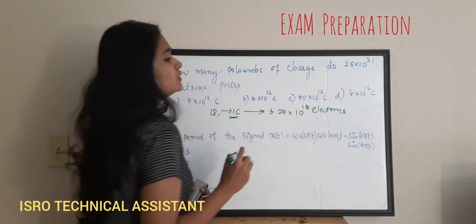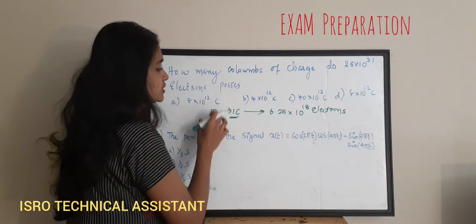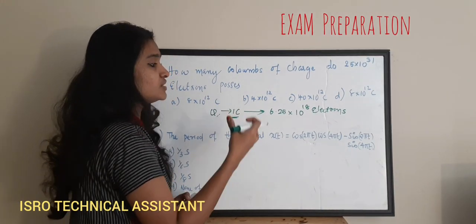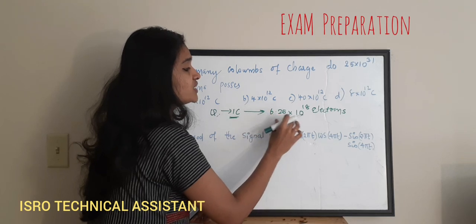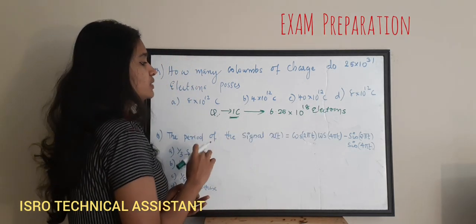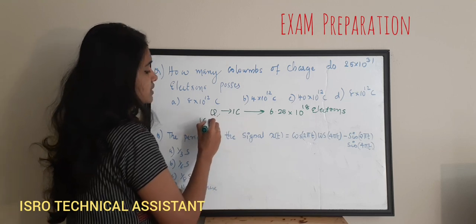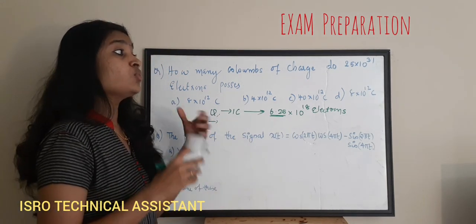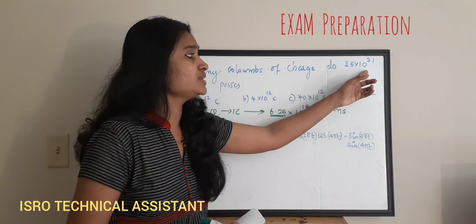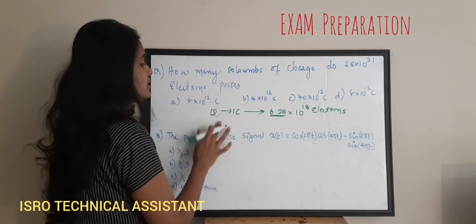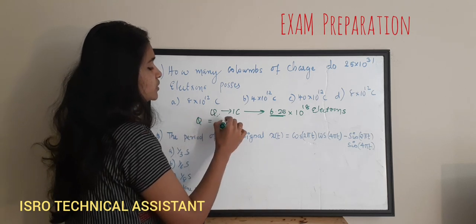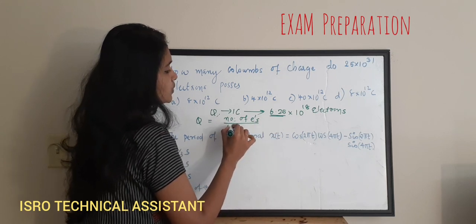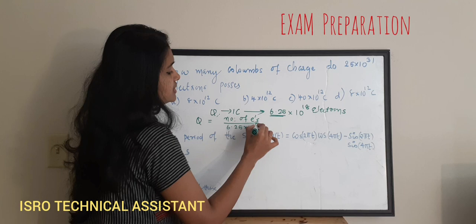So this is one thing you have to know. One coulomb of charge is defined as the charge possessed by 6.25×10¹⁸ electrons. So if one coulomb is the charge possessed by 6.25×10¹⁸ electrons, what will be the charge possessed by 25×10³¹ electrons? The equation is: Q = number of electrons divided by 6.25×10¹⁸.